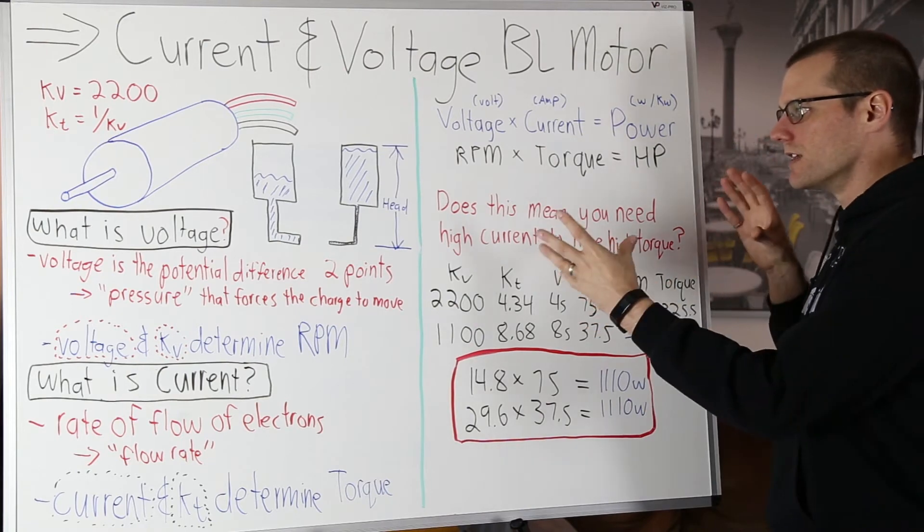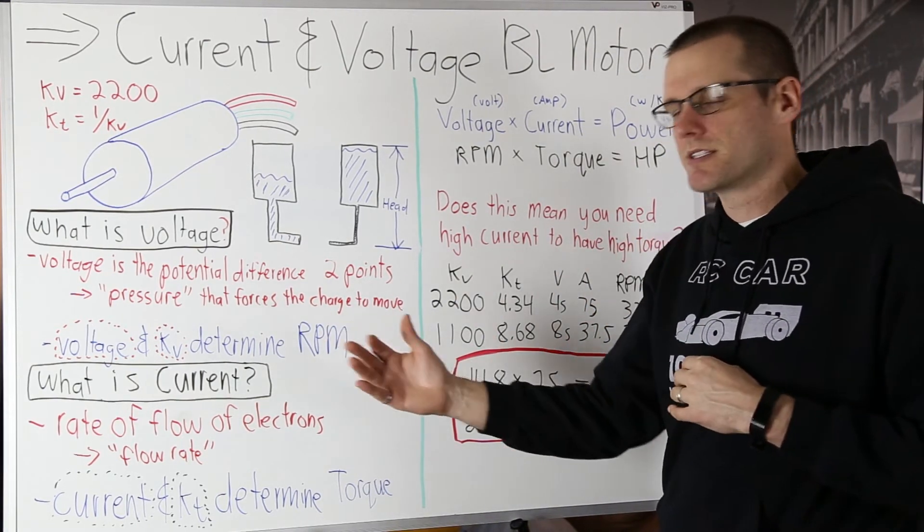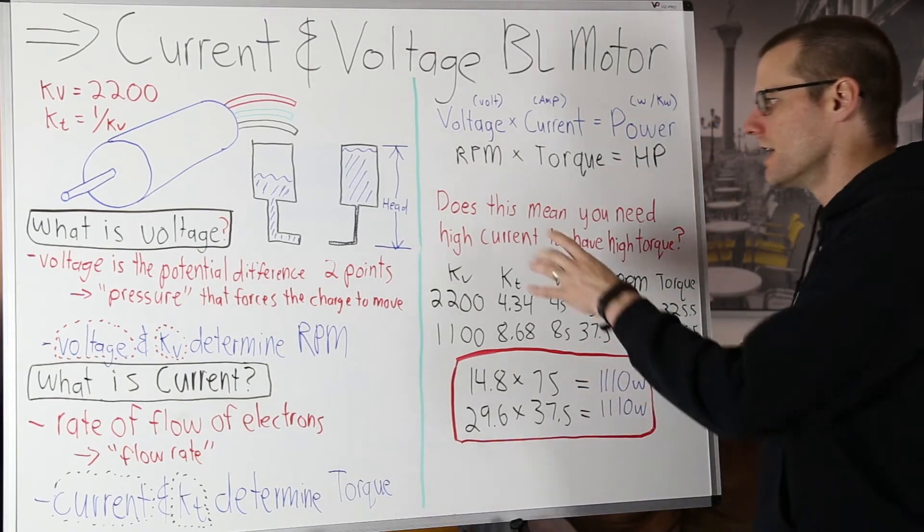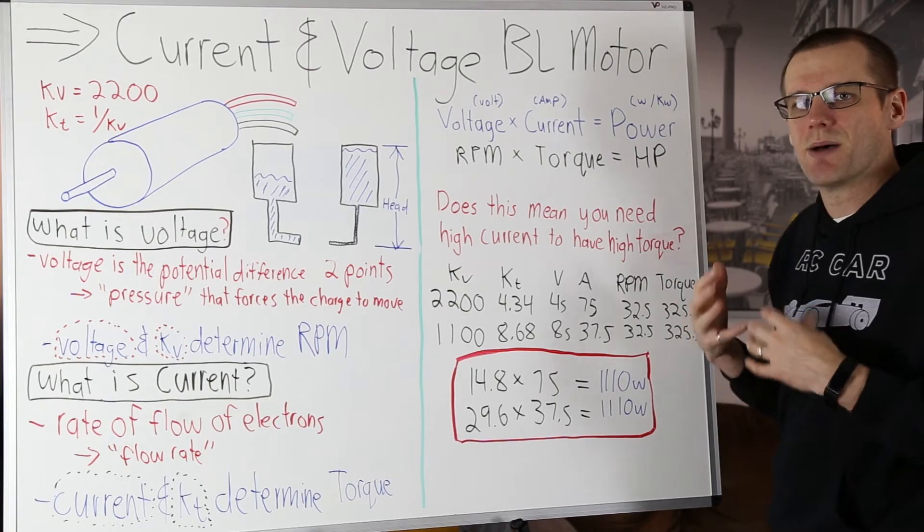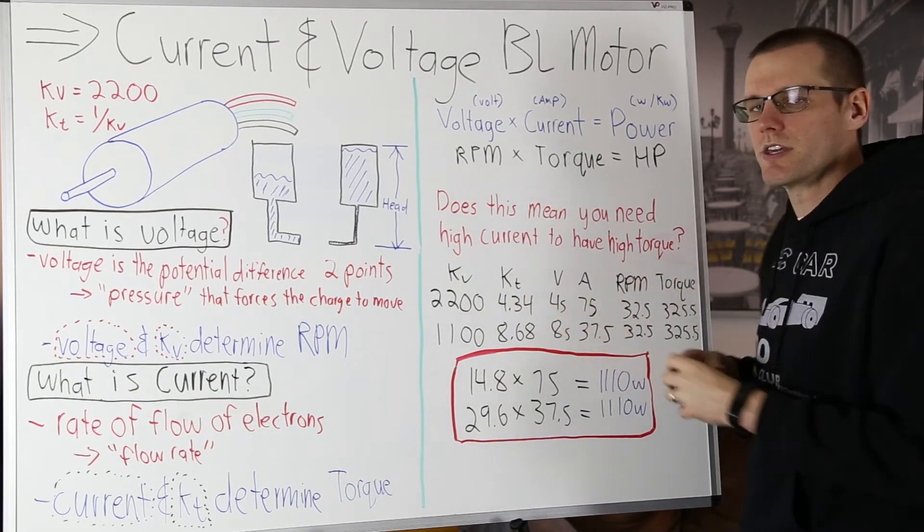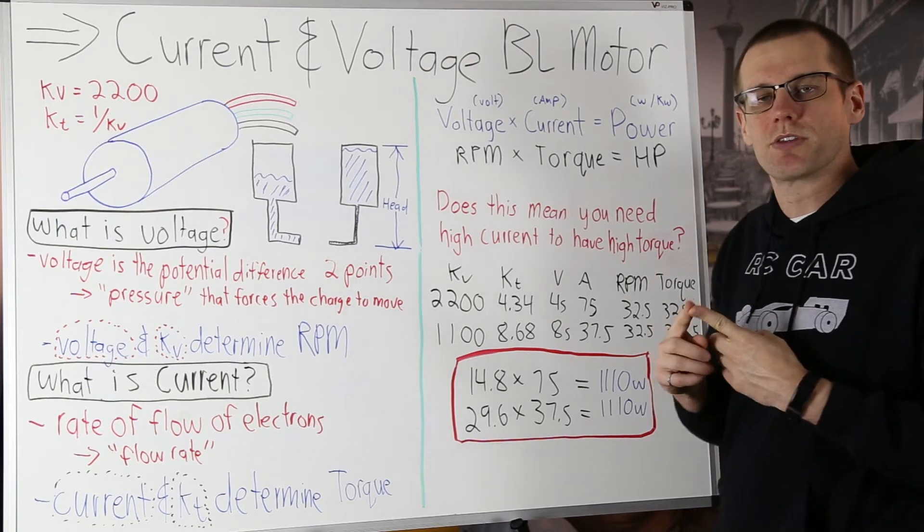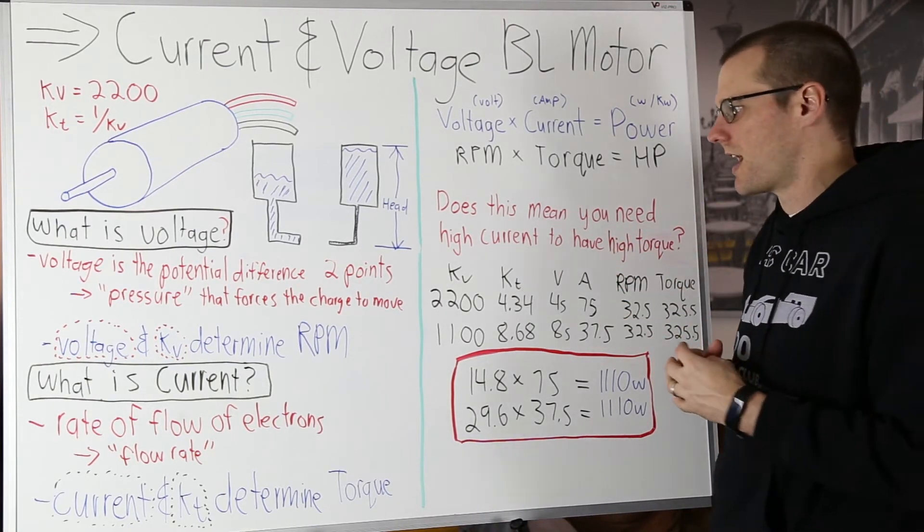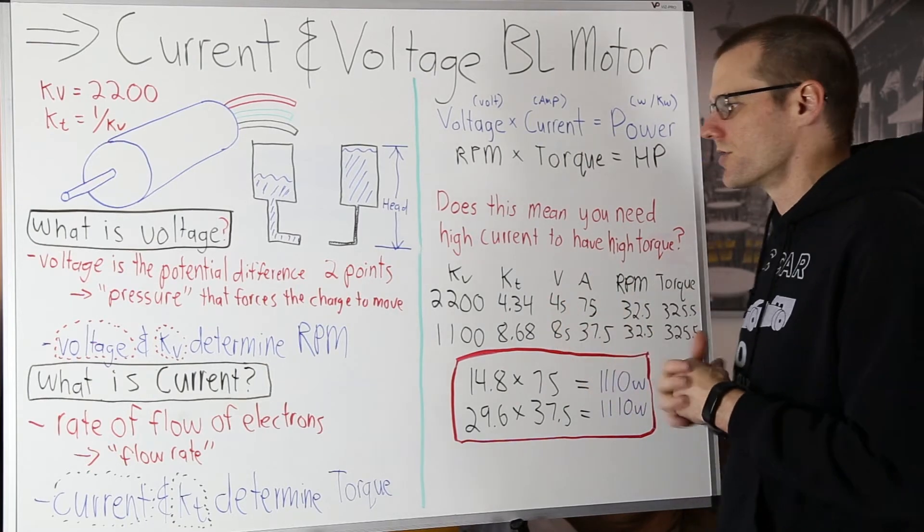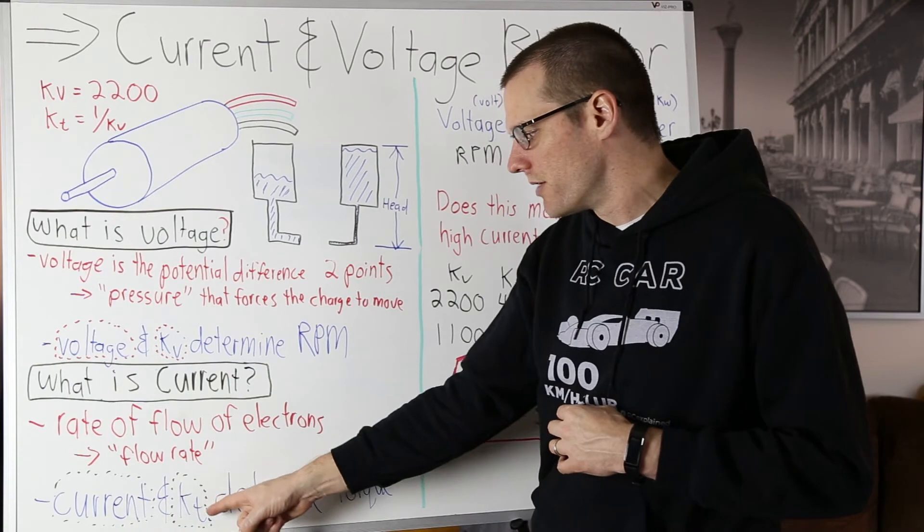Now let's take a look at this question here. I think this is really important to understand because I don't want you to get misled down a specific path. Does this mean you need high current in order to have high amounts of torque? Well the answer to this is no. You don't need to have a high amount of current flowing through that brushless motor in order to have a high output torque.